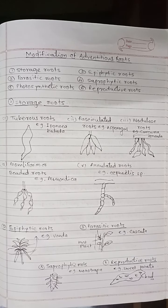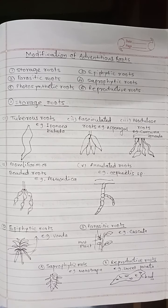First, modification for storage of food material — that is storage roots. In tuberous roots, the adventitious root becomes swollen to store food material. These adventitious roots are swollen without any definite shape. Example: Ipomoea batatas, meaning sweet potato.